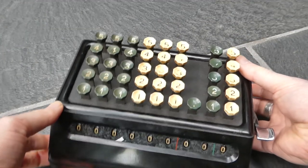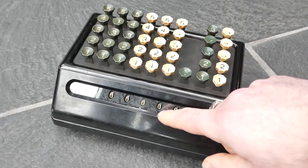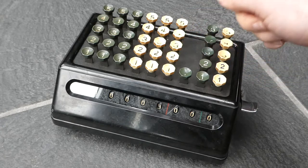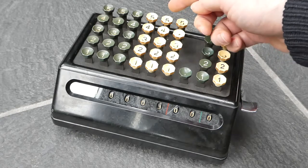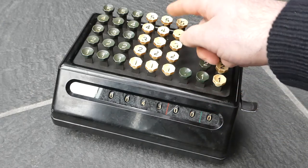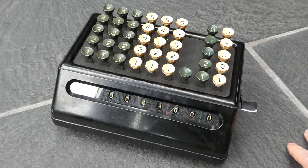These early models would increment the register on the downstroke of a key. That has the problem that if you push the key only part way down, then only part of the number gets added, and that can lead to wrong results if you're not careful.